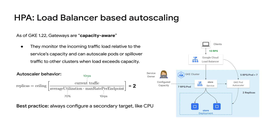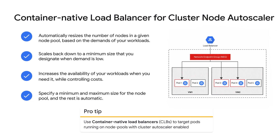If you are using Kubernetes, we recommend that you consider load balancer-based autoscaling to improve the performance, scalability, and reliability of your applications. GKE's Cluster Autoscaler automatically resizes the number of nodes in a node pool based on demand, which can increase availability and control costs. You specify a minimum and maximum size, and the rest is automatic.